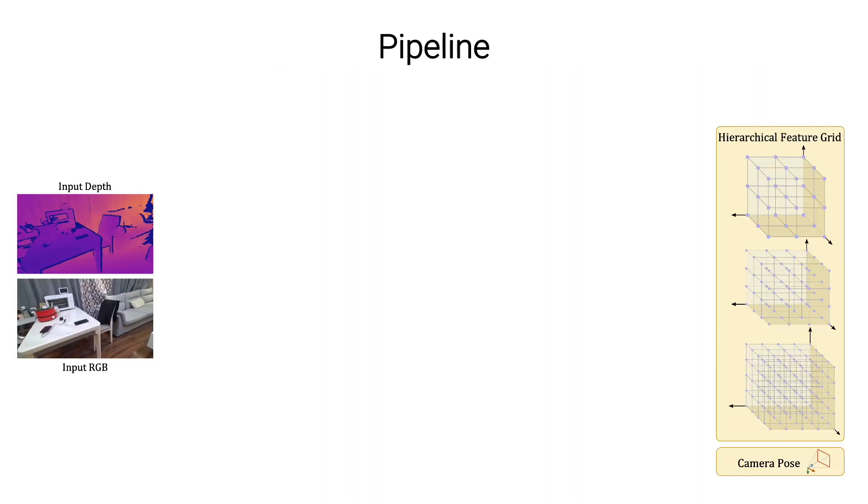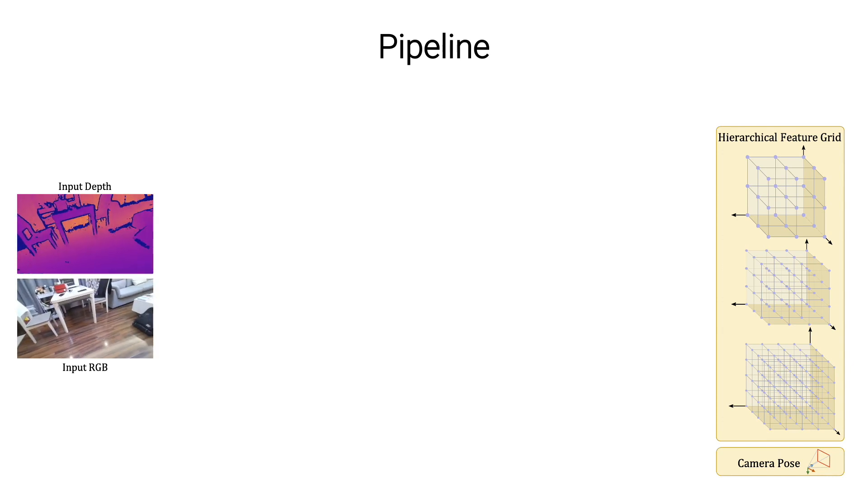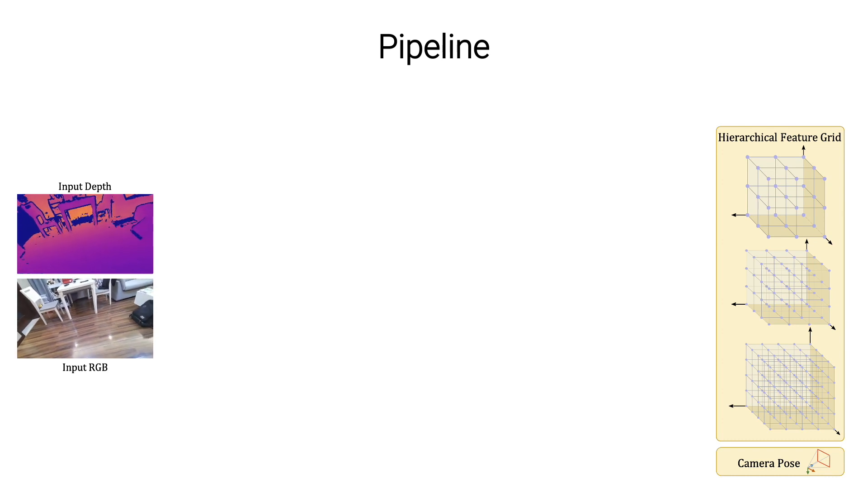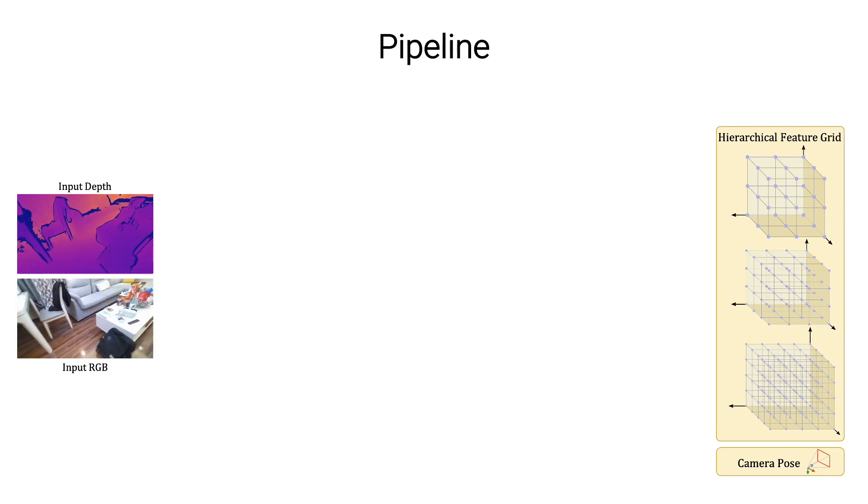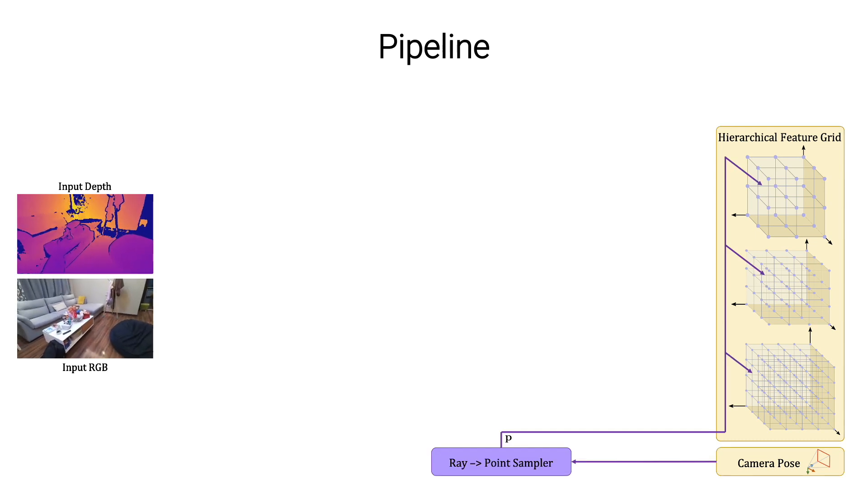In detail, given a monocular RGB d-video as shown on the left, our proposed online Slam system simultaneously estimates the camera poses and the 3D map of the scene that is represented as a hierarchical feature grid shown on the right. We aim to reproduce the input RGB and depth images by randomly sampling rays for the current camera pose estimation.